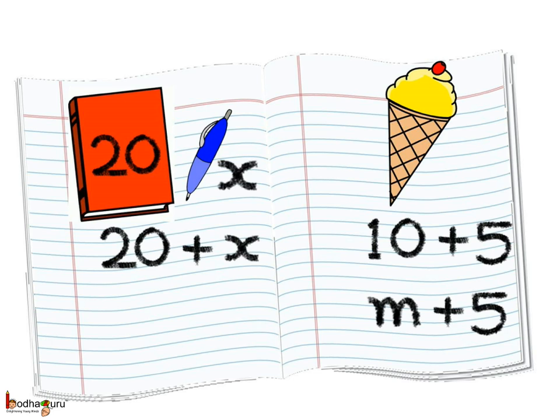Coming to next example, the cost of vanilla cone ice cream went up by rupees 5. Say its previous price was rupees 10, so the present price is 10 plus 5. What if we denote the previous price by a literal number, say M, then the present price becomes M plus 5.